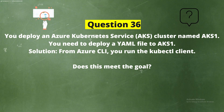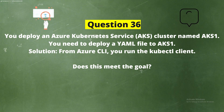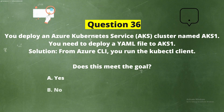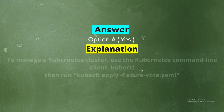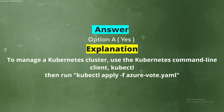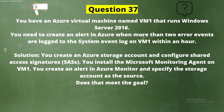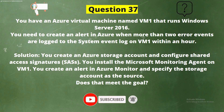Question 36: You deploy an Azure Kubernetes Service cluster named AKS1. You need to deploy a YAML file to AKS1. Solution: From Azure CLI, you run the kubectl client. Does this meet the goal? Option A: Yes. Option B: No. The correct answer is Option A: Yes. Explanation: To manage a Kubernetes cluster, use the Kubernetes command-line client kubectl, then run kubectl apply -f azure-vote.yaml.